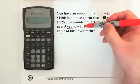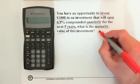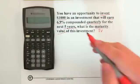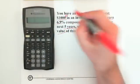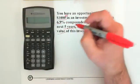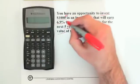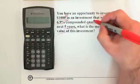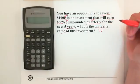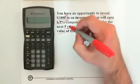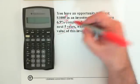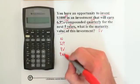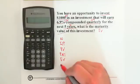The question is asking for the maturity value, so that's our future value. The $1,000 we want to invest is our present value. The 6.9% is our interest rate, our IY. Compounded quarterly means quarterly is our CY — compounding periods per year. And the five years will be our N.